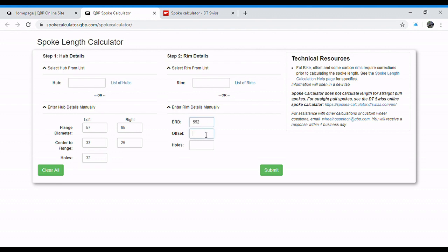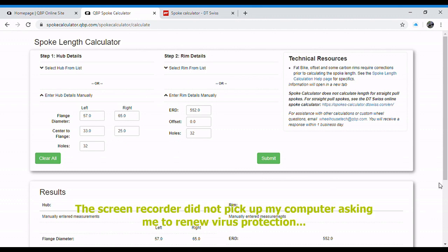You can put offset in here. I like to do it manually, so I always put that at zero. Then hit submit.